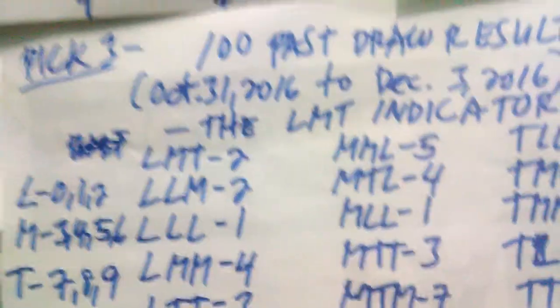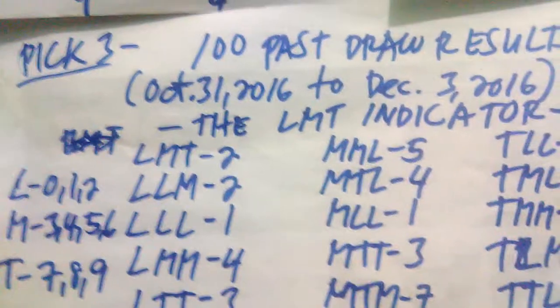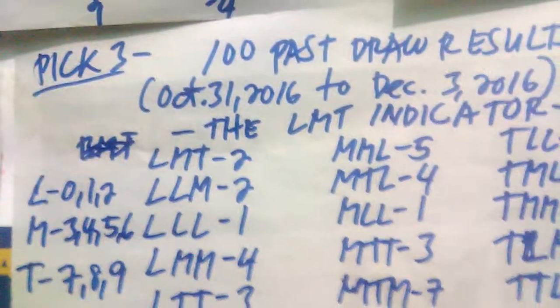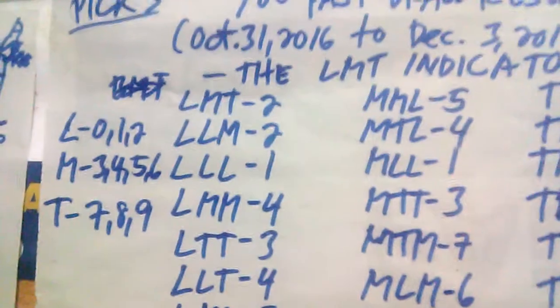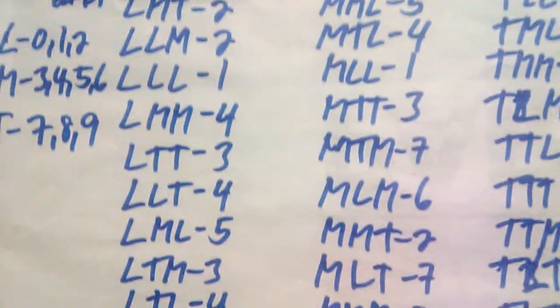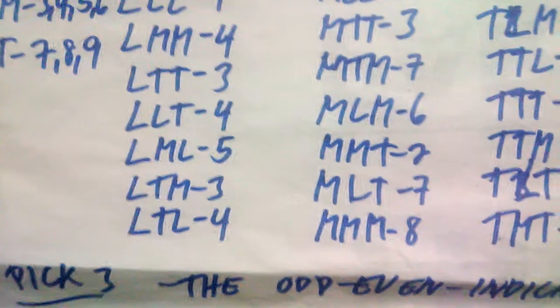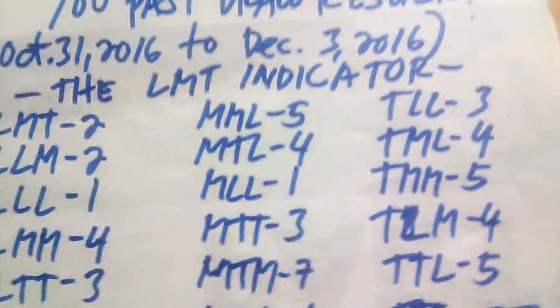LMT had only 2 out of 100 draw results with that particular arrangement. LLM also had 2. Low-Low-Low had 1. LMM had 4. LTT had 3. LLT had 4. LML had 5. LTM had 3. LTL had 4.